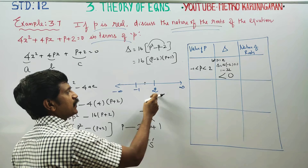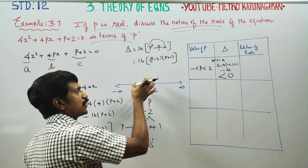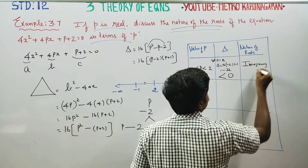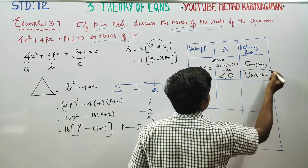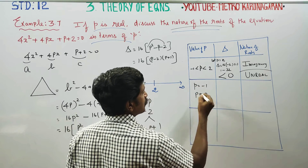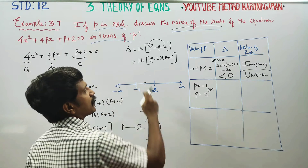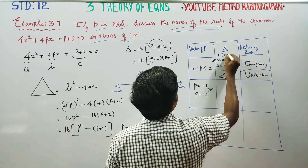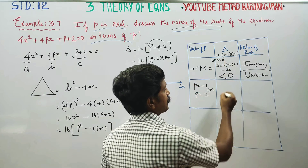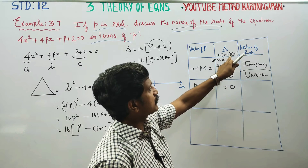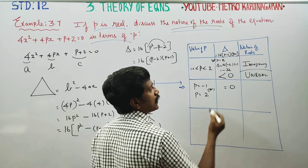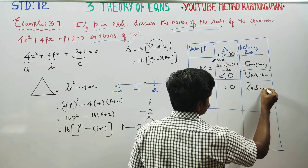When delta is less than 0, the roots are imaginary and unreal. When p is equal to minus 1 or p is equal to 2, delta equals 16 into p minus 2 into p plus 1 equals 0. So the roots will be real and equal.